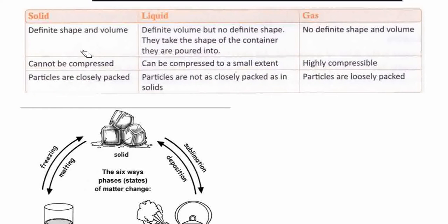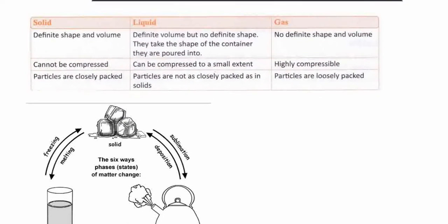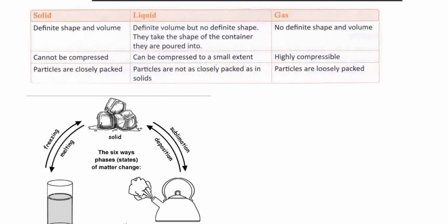Solid has a definite shape and volume. It cannot be compressed. Particles are closely packed. Liquid has a definite volume but no definite shape. Liquids change shape wherever you put them — they take the shape of the container they are poured into. Liquids can be compressed to a small extent, and particles are not as closely packed as in solids.